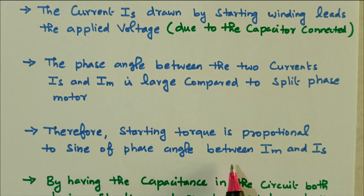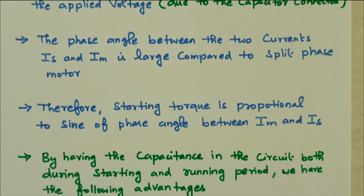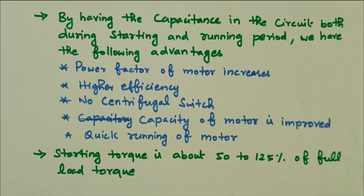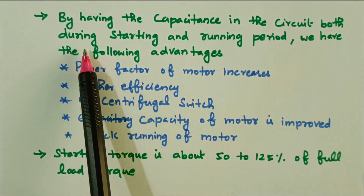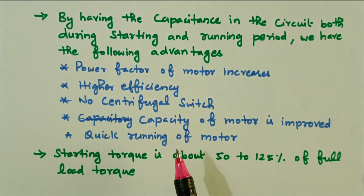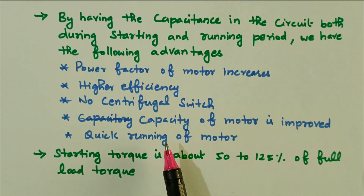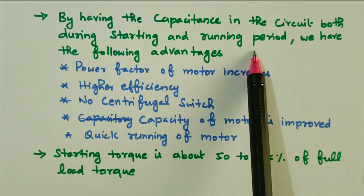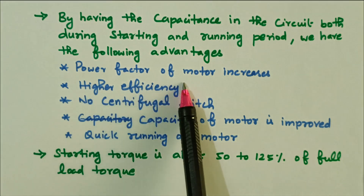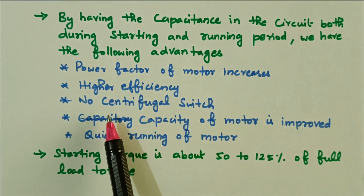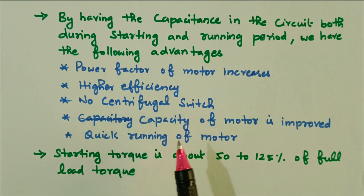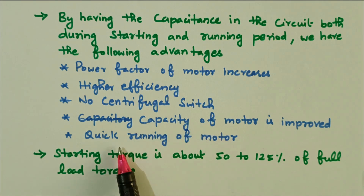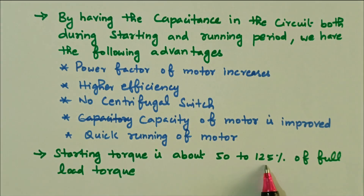By having capacitance in the circuit during both starting and running periods, the following advantages are available: the power factor of the motor increases, high efficiency is achieved, there is no centrifugal switch mechanism, the capacity of the motor is improved, and quicker running of the motor. The starting torque is about 50 to 120 percent of full load torque.